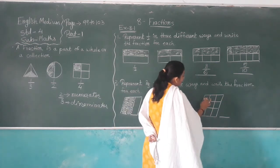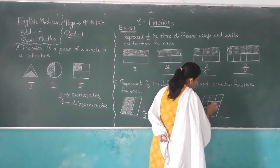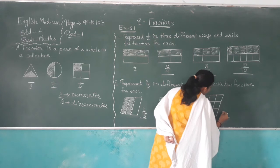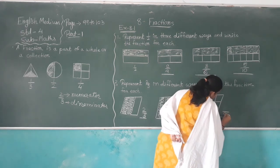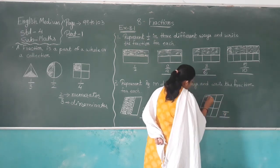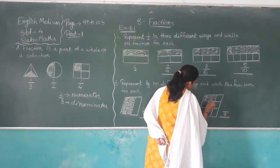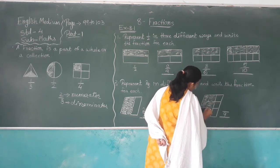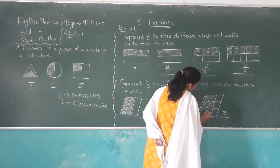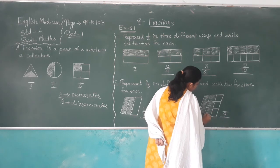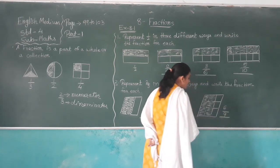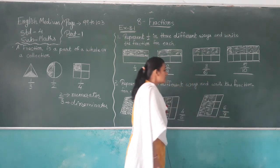Here total one, two, three, four, five, six, seven, eight, nine — nine parts are there. The shaded parts are one, two, three, four, five, and six. So six out of nine parts are shaded.